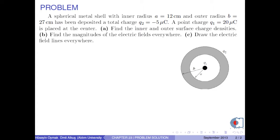A spherical metal shell with inner radius A equal to 12 cm and outer radius B equal to 27 cm has been deposited a total charge Q2, which is negative 5 microcoulombs. A point charge Q1, which is 20 microcoulombs, is placed at the center.